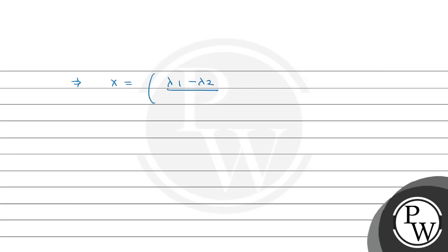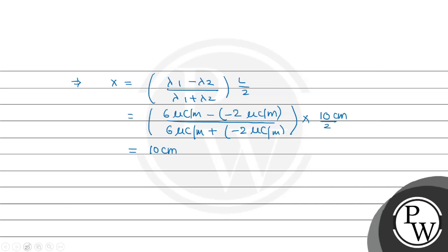If we solve this, then x equals (λ1 - λ2)/(λ1 + λ2) times L/2. If we put values, then λ1 is 6 microcoulombs per meter minus (-2 microcoulombs per meter) divided by 6 microcoulombs per meter plus (-2 microcoulombs per meter), multiplied by 10 centimeters divided by 2. So x equals 10 centimeters.